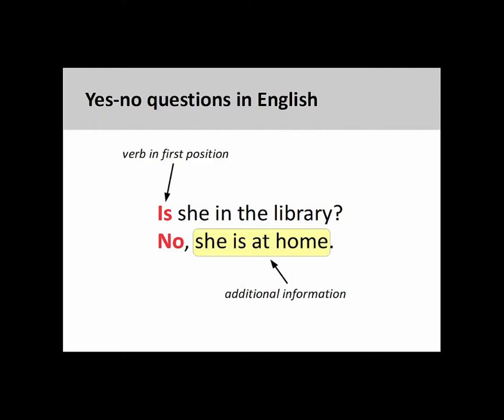Of course, you can provide additional information beyond a simple yes or no, but this is not necessary. If you do not provide this information yourself, however, the person with whom you are speaking will probably ask for more information with an interrogative word — for example, well, where is she?